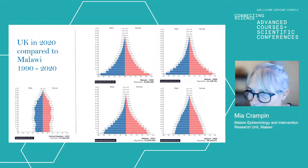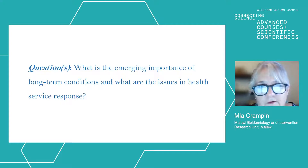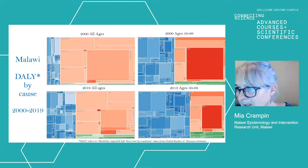This is in contrast to the type of population pyramid that you see in the UK, which may still be quite a way off for Malawi. So what's the emerging importance of long-term conditions and what are the issues in the health service response to this?